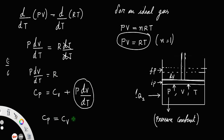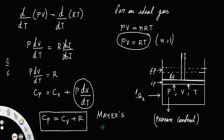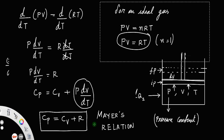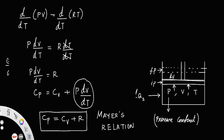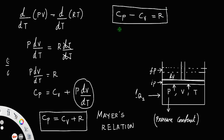So we arrive at Cp = Cv + R. This relation is called Mayer's relation, and it can also be written as Cp − Cv = R. From this it is clear that Cp is always greater than Cv, specifically greater than Cv by an amount equal to the universal gas constant R.